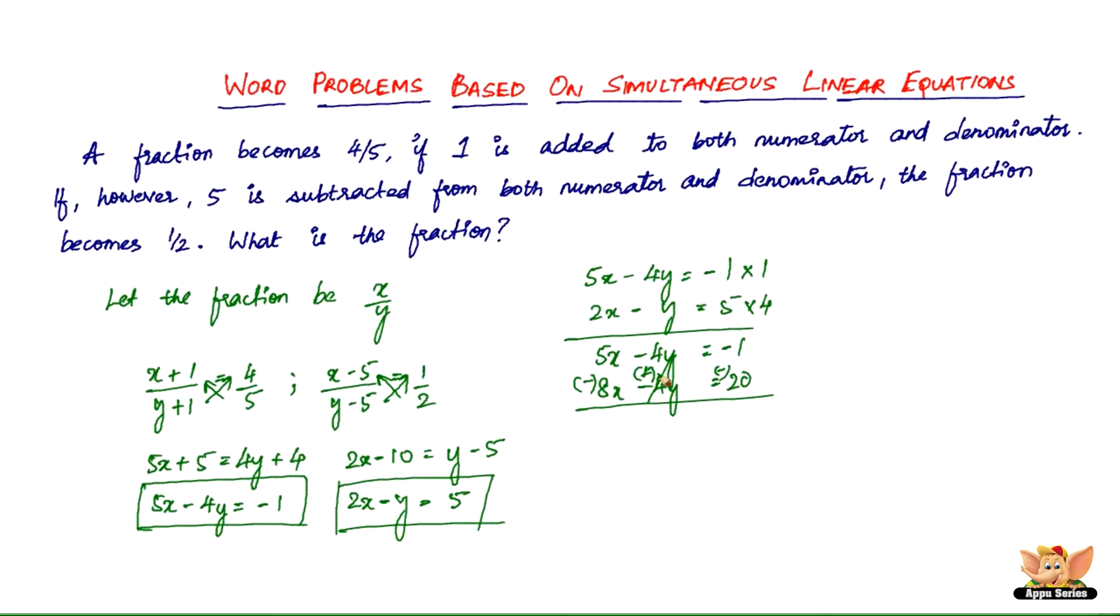So 4y, 4y gets cancelled. And 5x minus 8x is minus 3x. Minus 1 minus 20 is minus 21. Negative, negative gets cancelled. x equals 21 by 3. So x equals 7. 3 goes 7 times in 21.